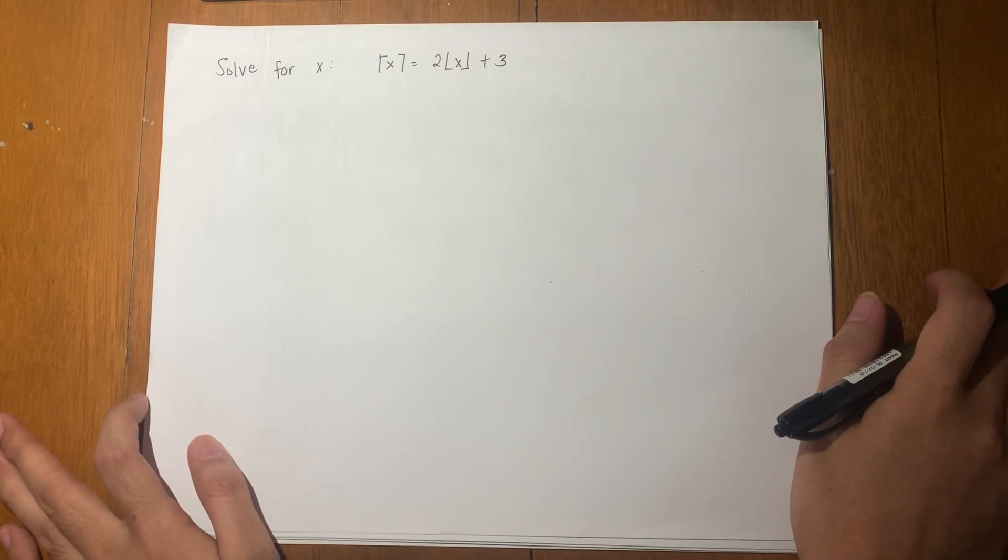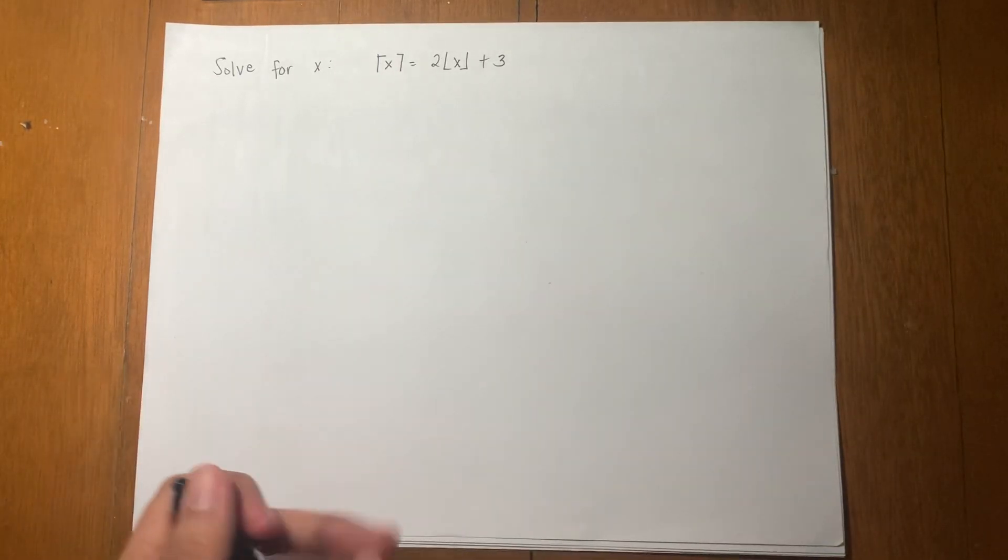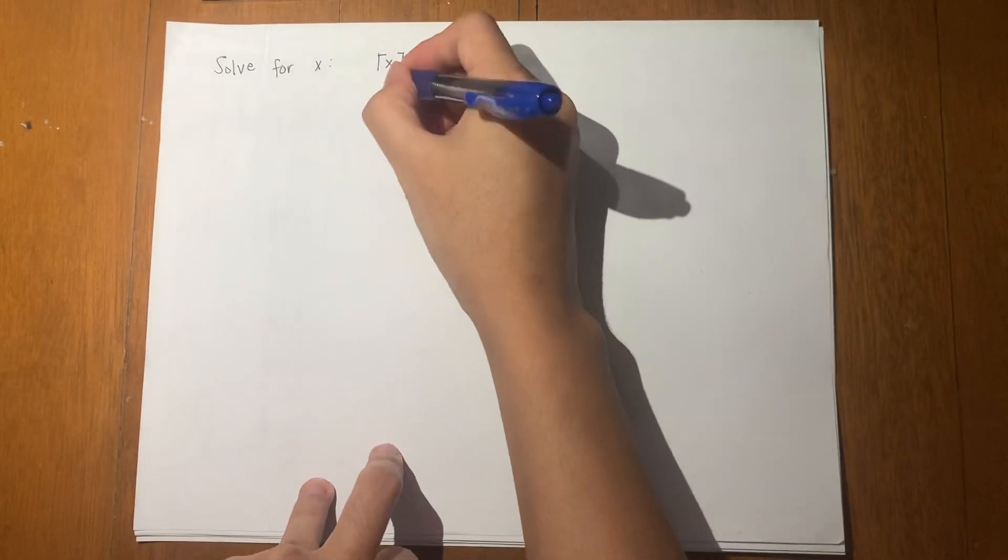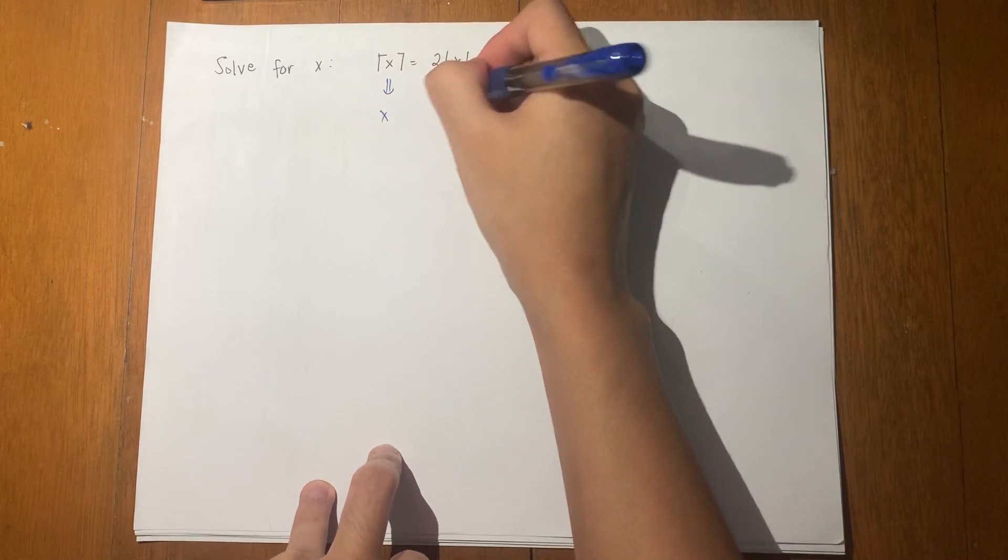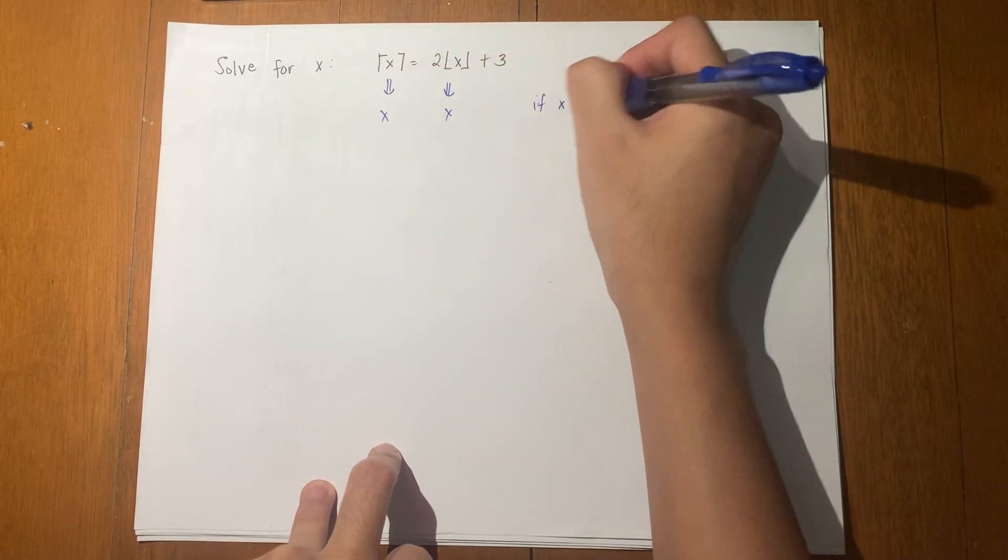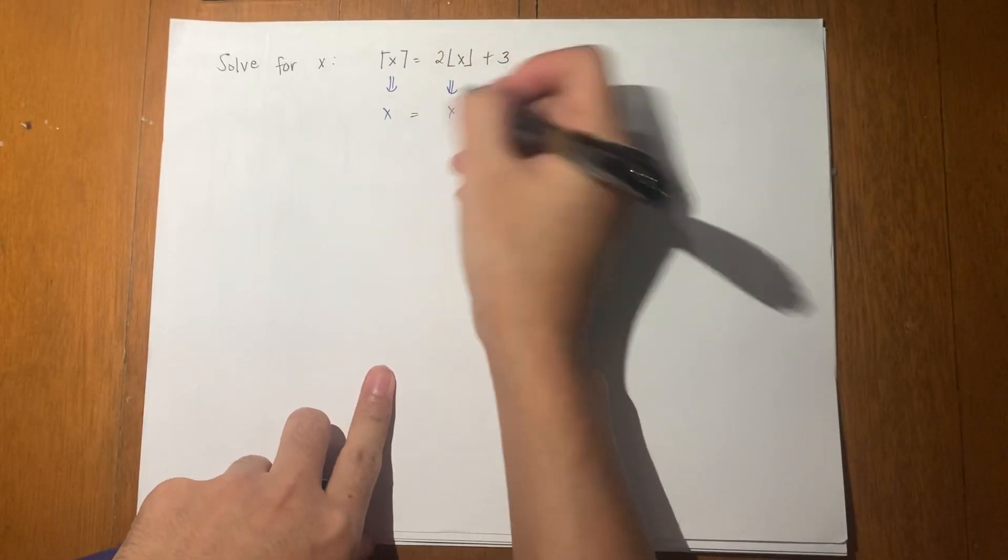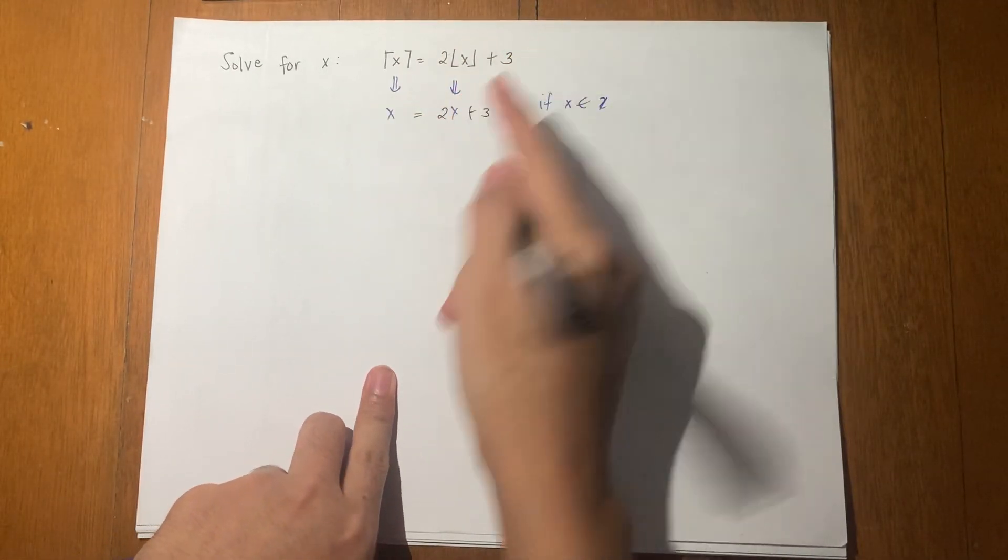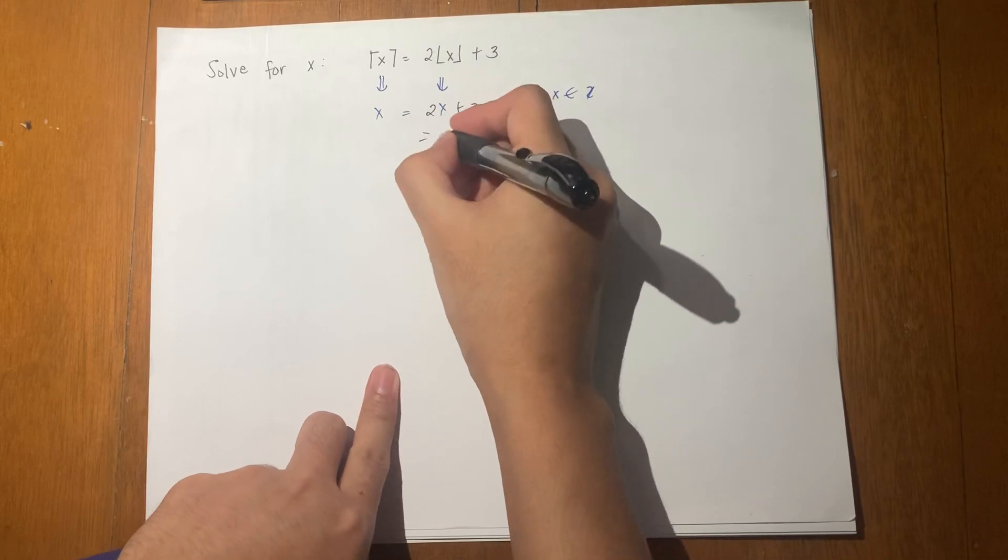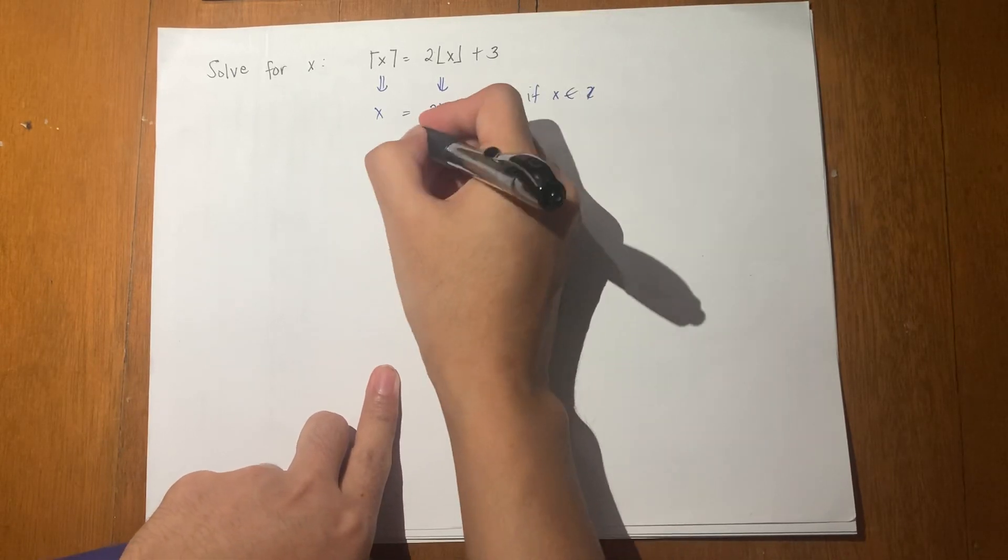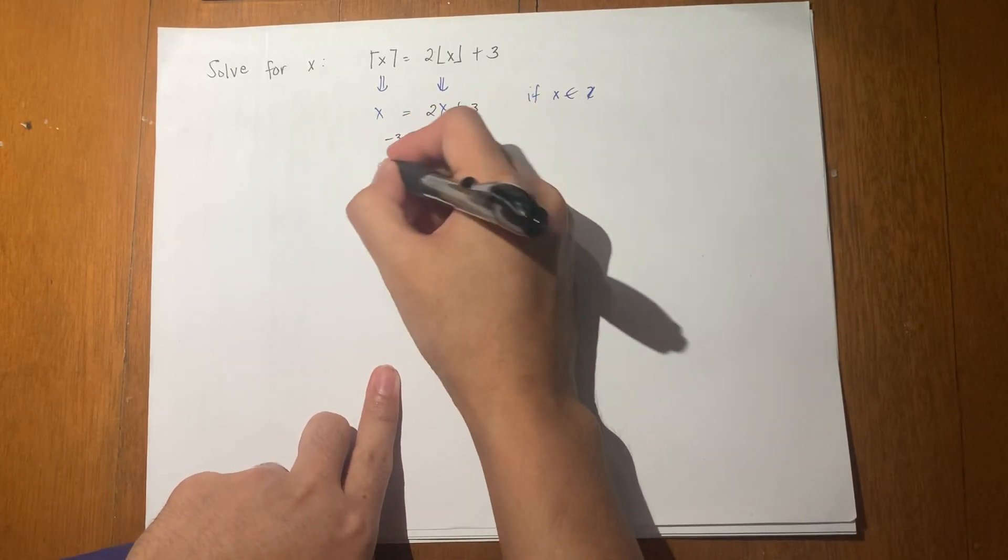For example, this one, the floor and ceiling function of x if x is an integer simplifies to just x. So this equation now becomes x equals 2x plus 3. We solve for x and get 2x minus x equals negative 3. Therefore, x equals negative 3.